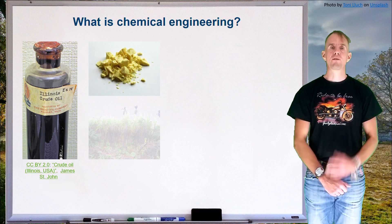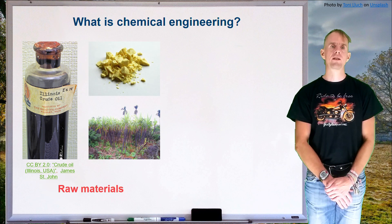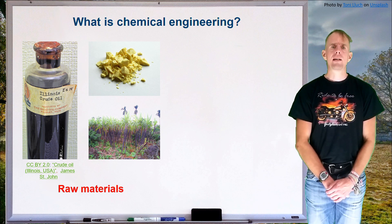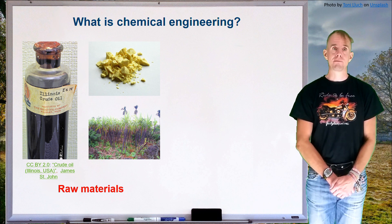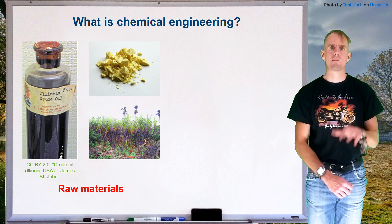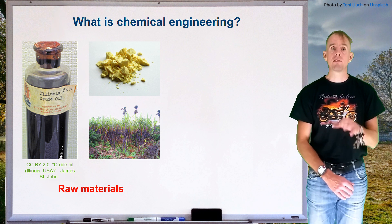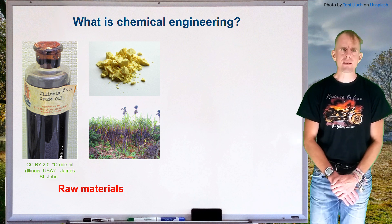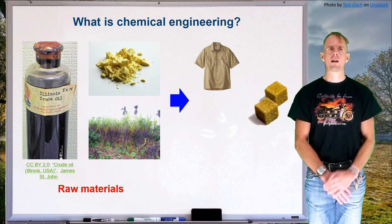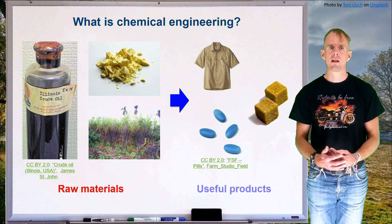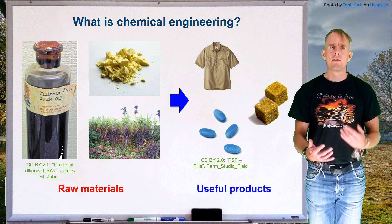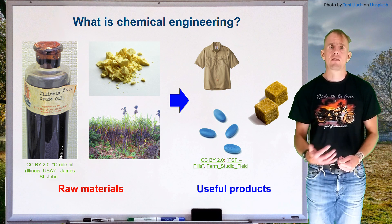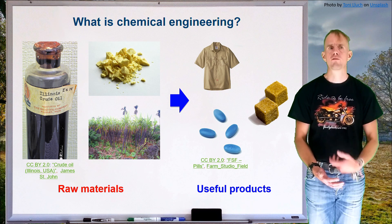Here on the whiteboard, I've put three examples of typical raw materials that the chemical and process industries might use: a bottle of crude oil (Illinois crude), some elemental sulphur, and some sugar cane. These are good representative examples of organic, inorganic, and biologically based raw materials. From a very small number of raw materials, a very wide range of products are made on an amazingly large scale. This is what separates chemical engineering from chemistry — we are making products for tens of millions, if not hundreds of millions, of people.